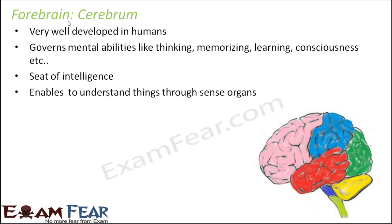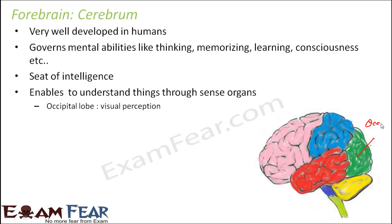The cerebrum enables us to understand things through sense organs. When you see something, the eyes help you see it but don't interpret what you saw — that interpretation is done by the brain, specifically in this region. The cerebrum is divided into different lobes, each for a specific purpose. For example, the occipital lobe is for visual perception — it helps you identify whether you saw a tiger or a dog.